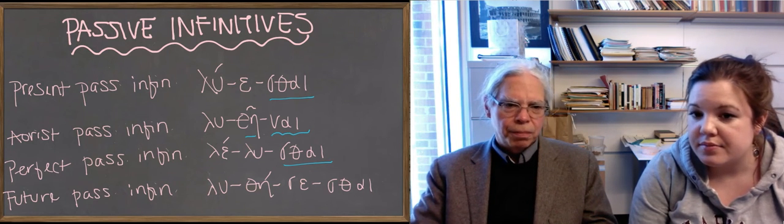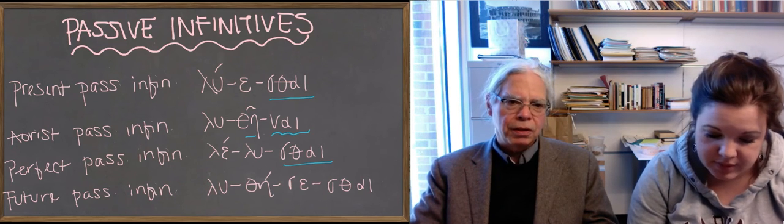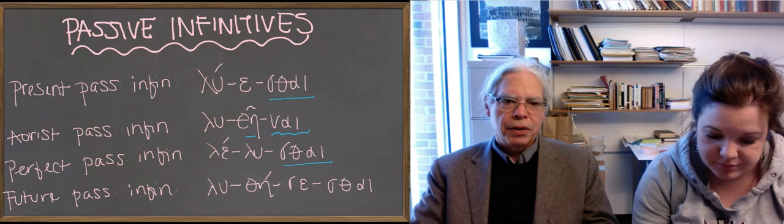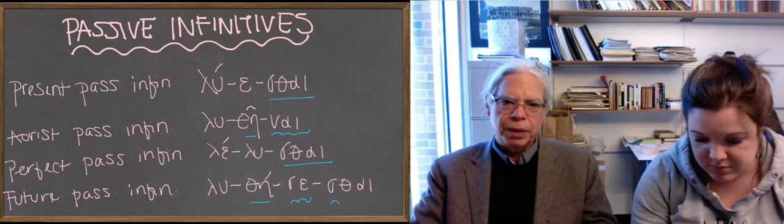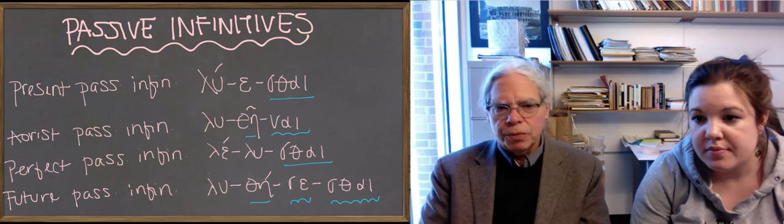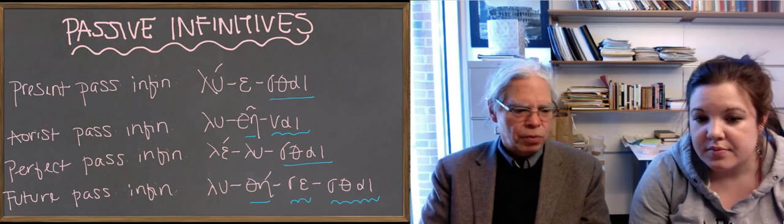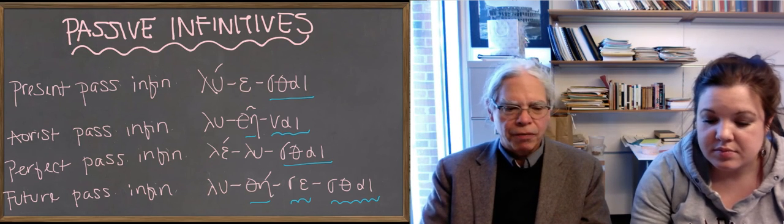So, the future passive infinitive, by contrast, has the passive ending λυθησεσθαι. The σε for futureness, and the epsilon thematic vowel, and the ending is θαι. This particular verb has the theta as well as the eta. We also want to show you a verb that doesn't have the theta.